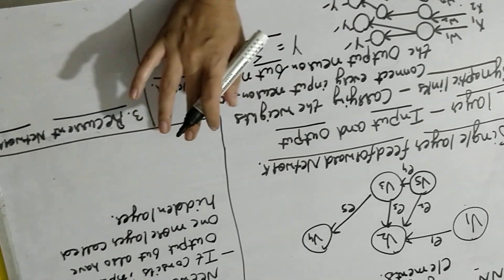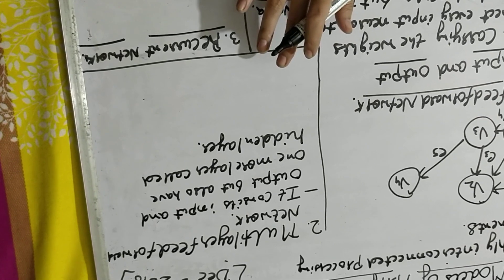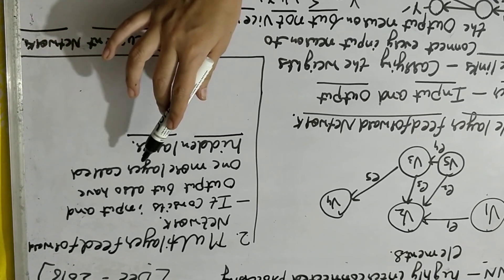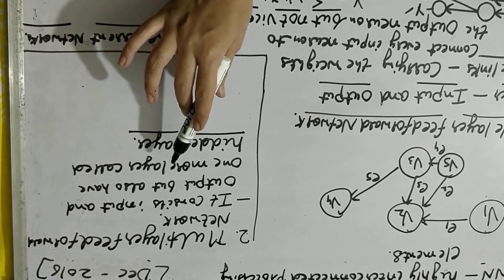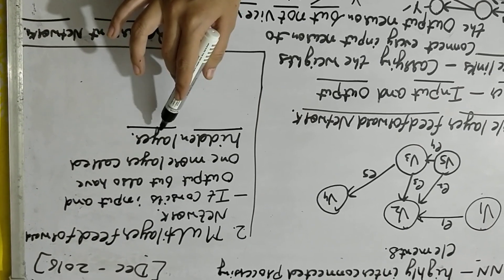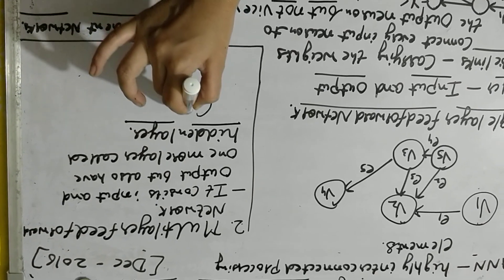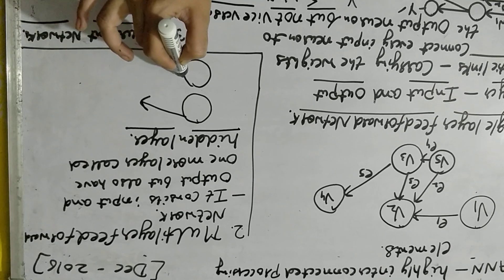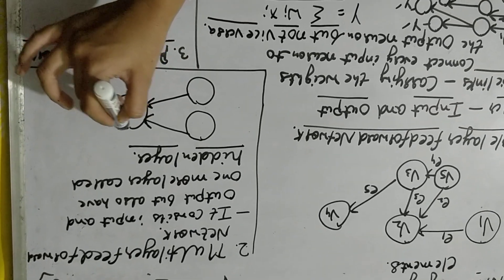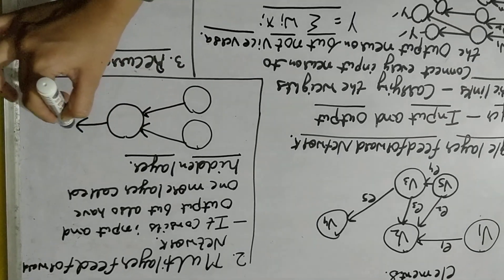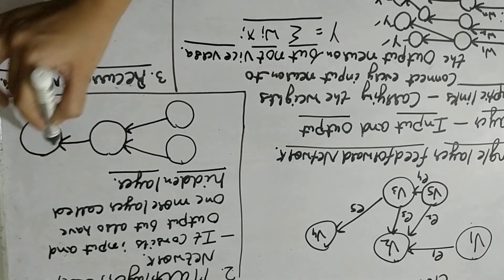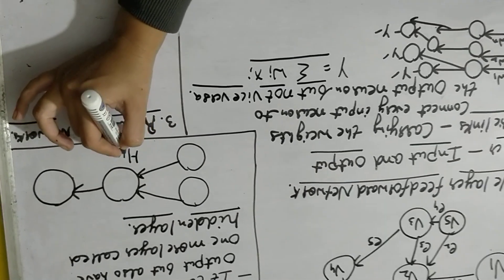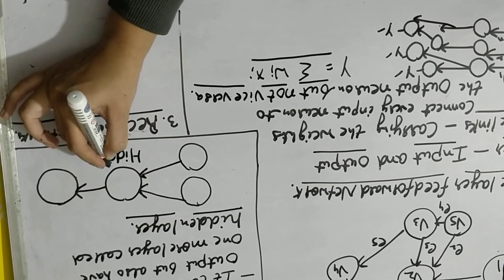The second structure is the multi-layer feed forward network. Here, in addition to the input and output layer, there is another layer considered — we call it the hidden layer. When you process something from input, you send it to the hidden layer first, and after that it goes to your output layer. So you have an extra layer called the hidden layer.